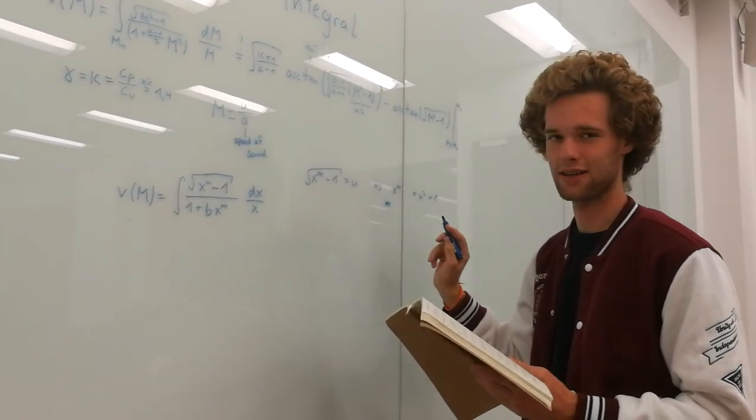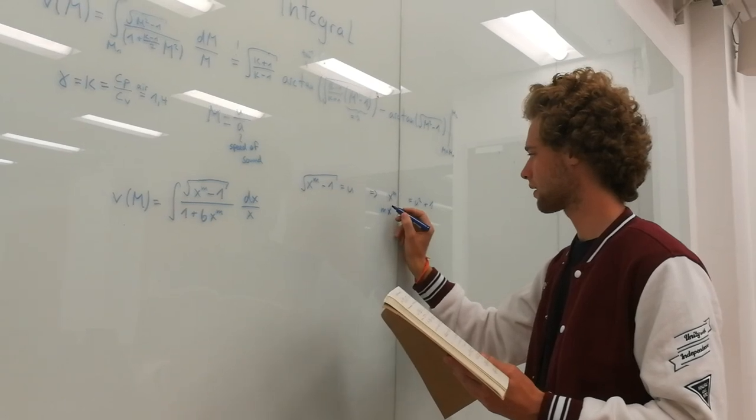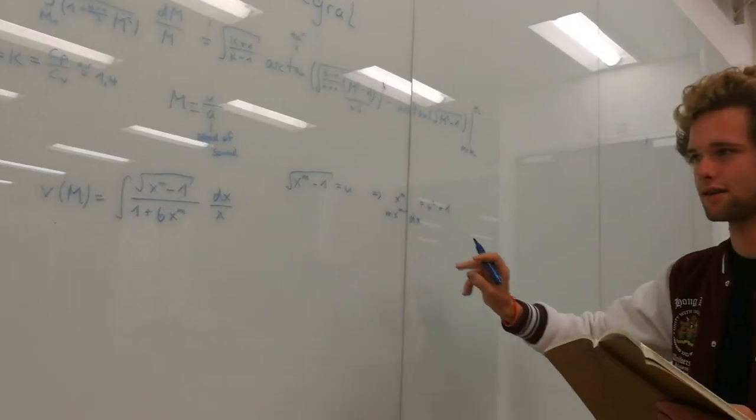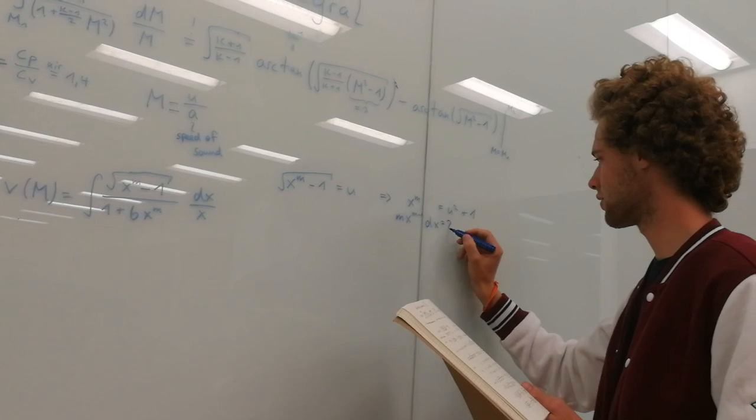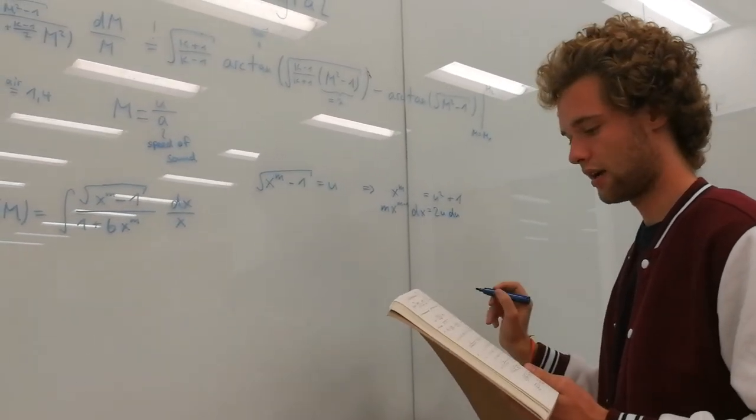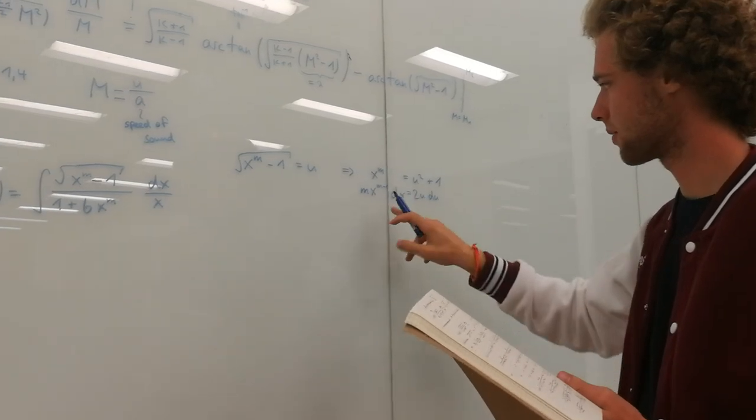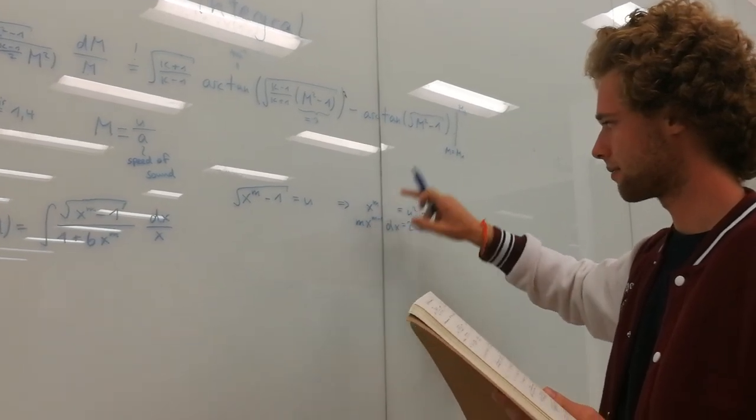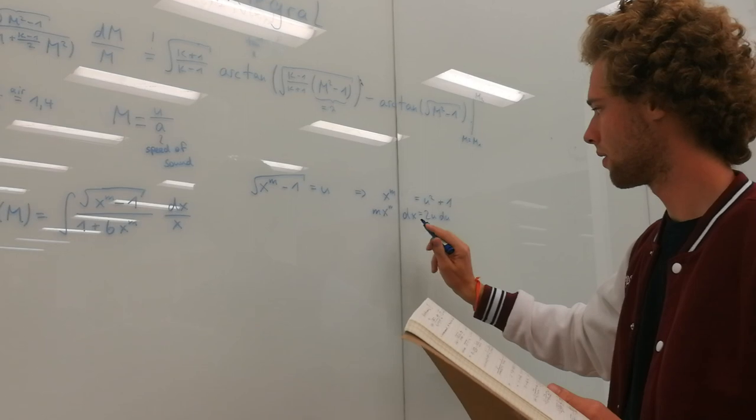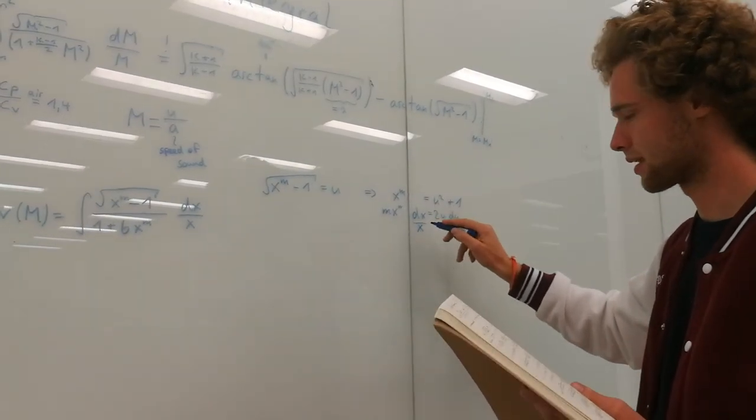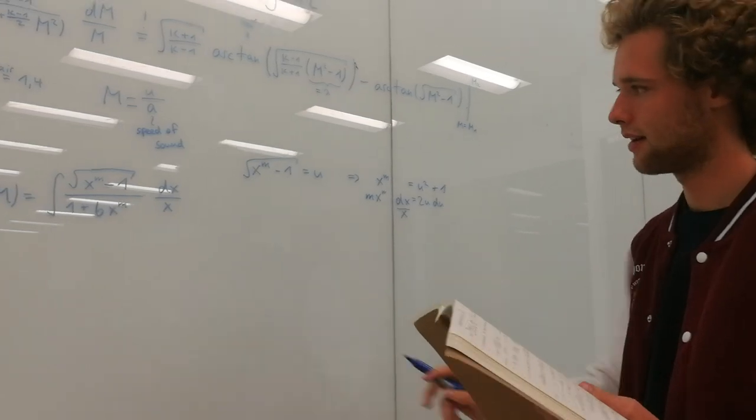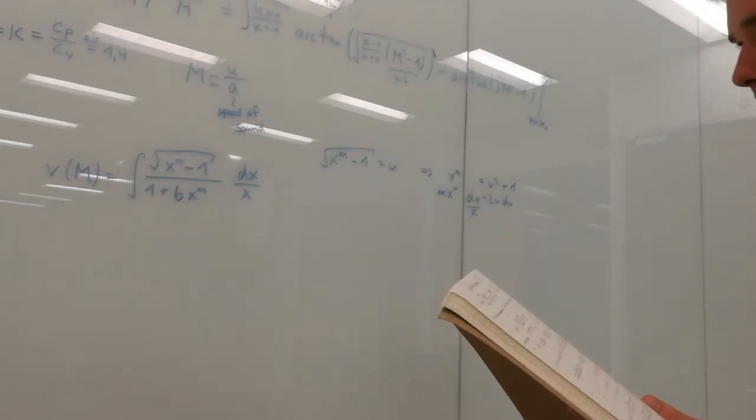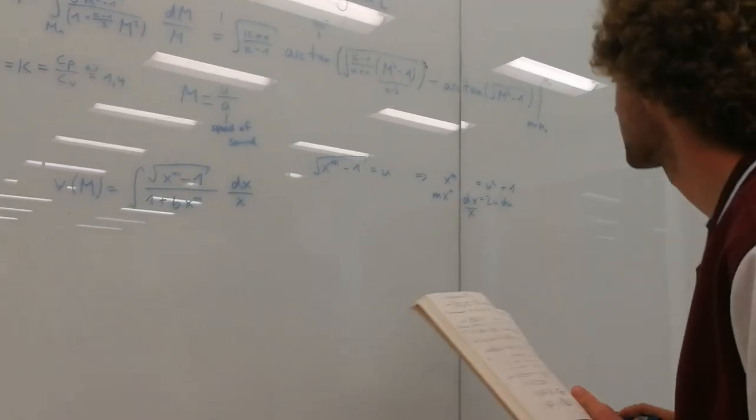So now we can take the first derivative of that. This is just deriving a polynomial. M times x to the m minus 1 dx, can you read that? Yeah, okay. Equals 2u du. This is the substitution that we're going to use. And now we can bring this, x to the m, and then we have x to the minus 1, which is nothing but 1 over x, and then bring that on the other side. So this is how we deal with this here. Yeah, let's plug this in.